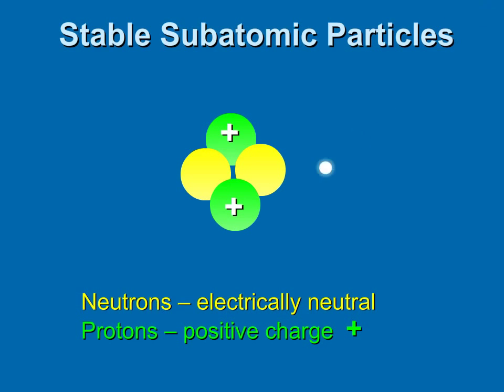And finally, electrons, which are very small compared to protons and neutrons. Electrons orbit around the nucleus and have a negative electrical charge. This attraction between the positive protons and negative electrons helps to hold the atom together.